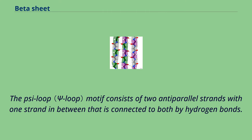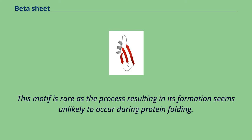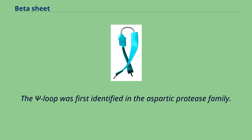The side loop motif consists of two anti-parallel strands with one strand in between that is connected to both by hydrogen bonds. There are four possible strand topologies for single side loops. This motif is rare as the process resulting in its formation seems unlikely to occur during protein folding. The side loop was first identified in the aspartic protease family.